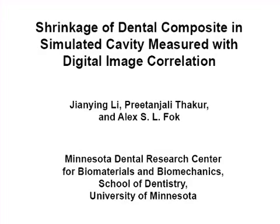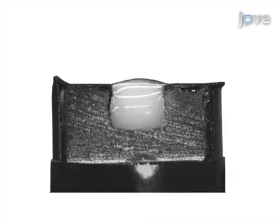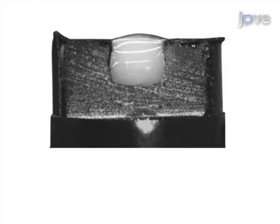The overall goal of this procedure is to use digital image correlation to reveal the shrinkage strain distribution in a model tooth cavity restored with resin composite when it is cured. This is accomplished by first creating a model tooth with a filled cavity and a surface that will allow the needed observations.